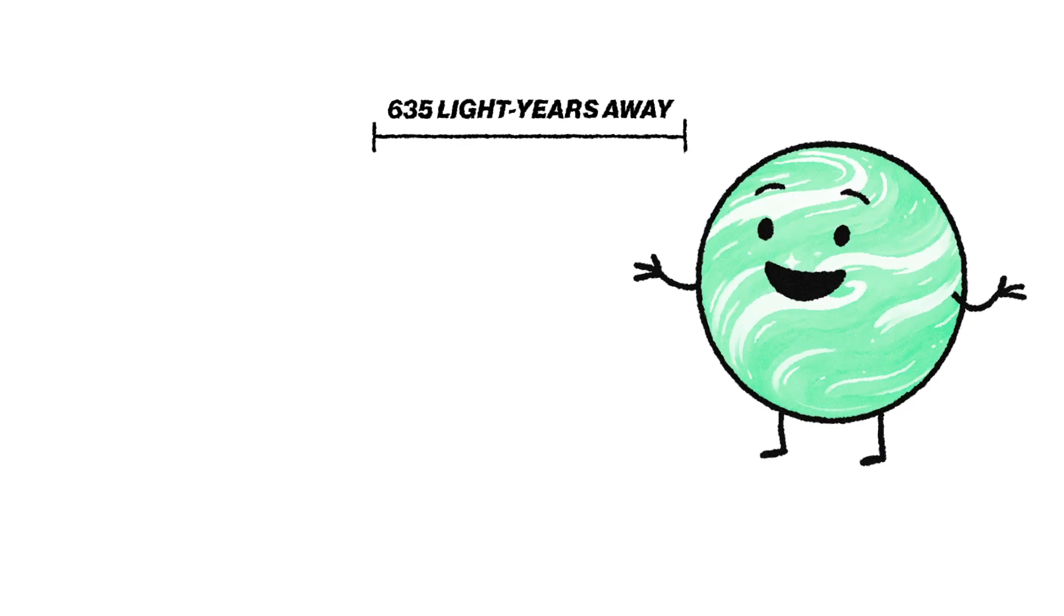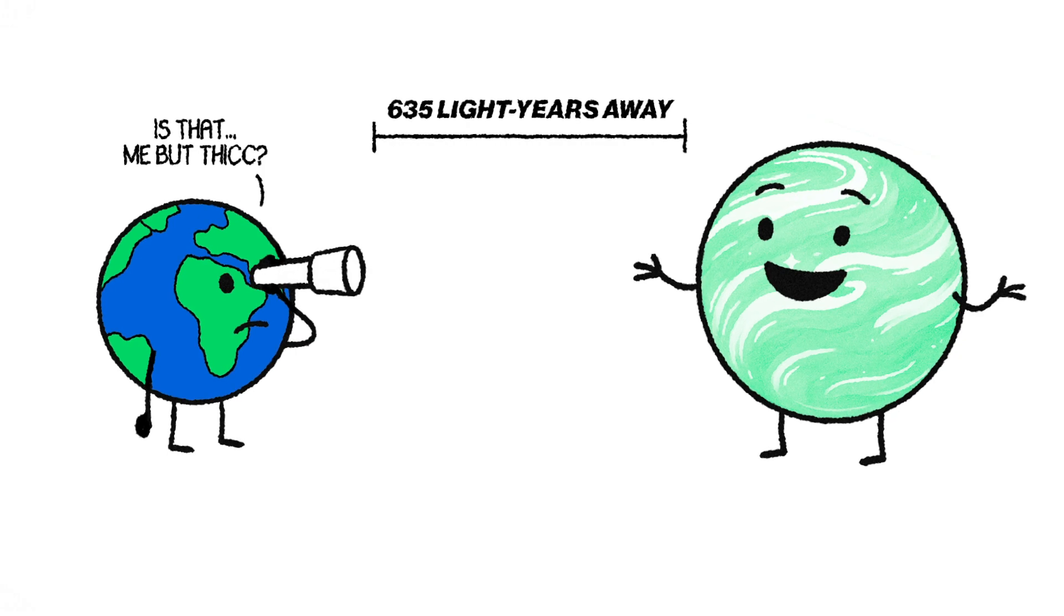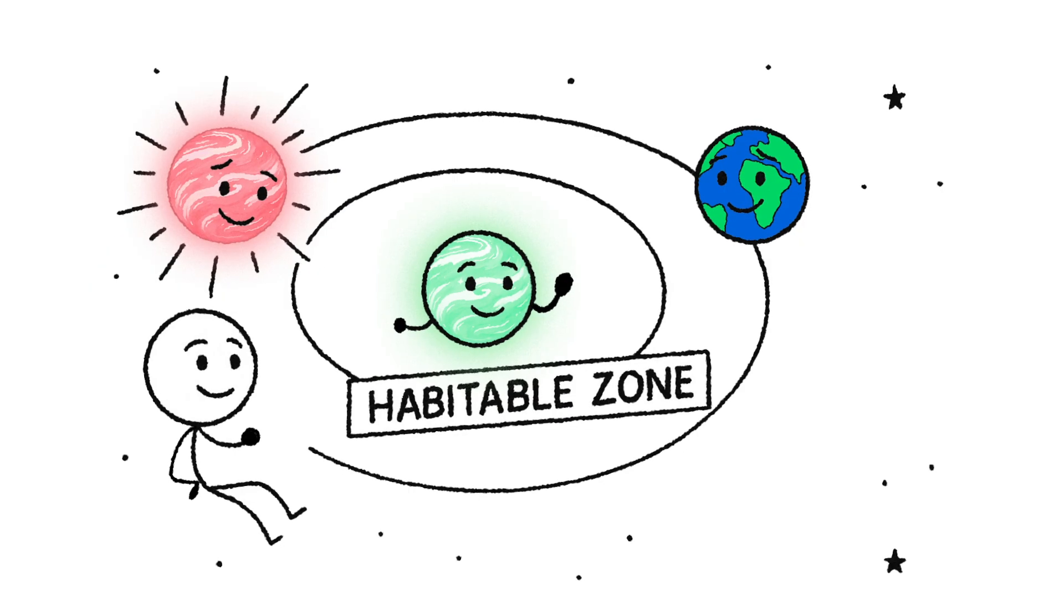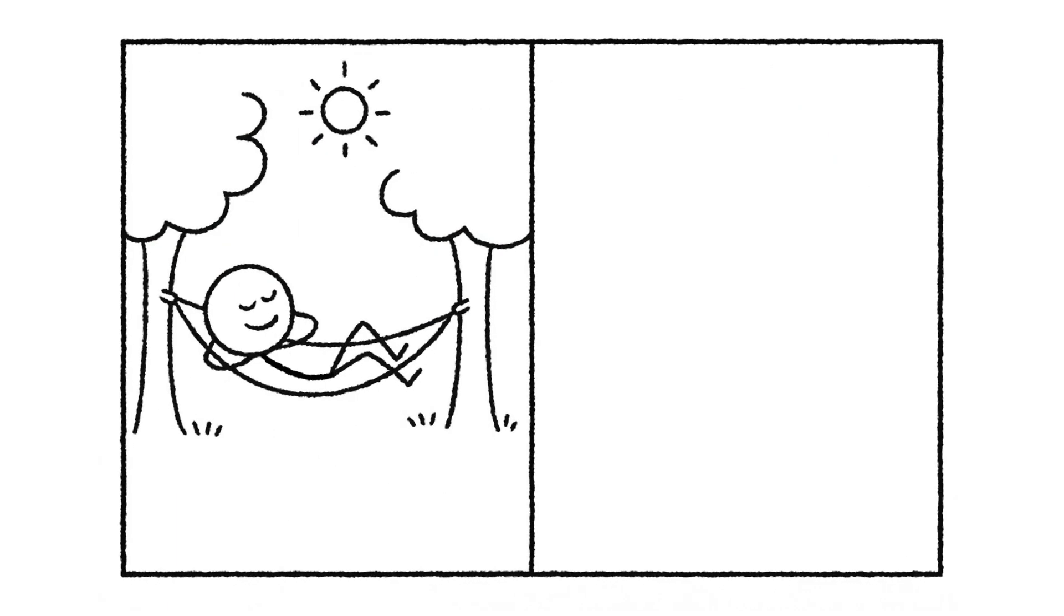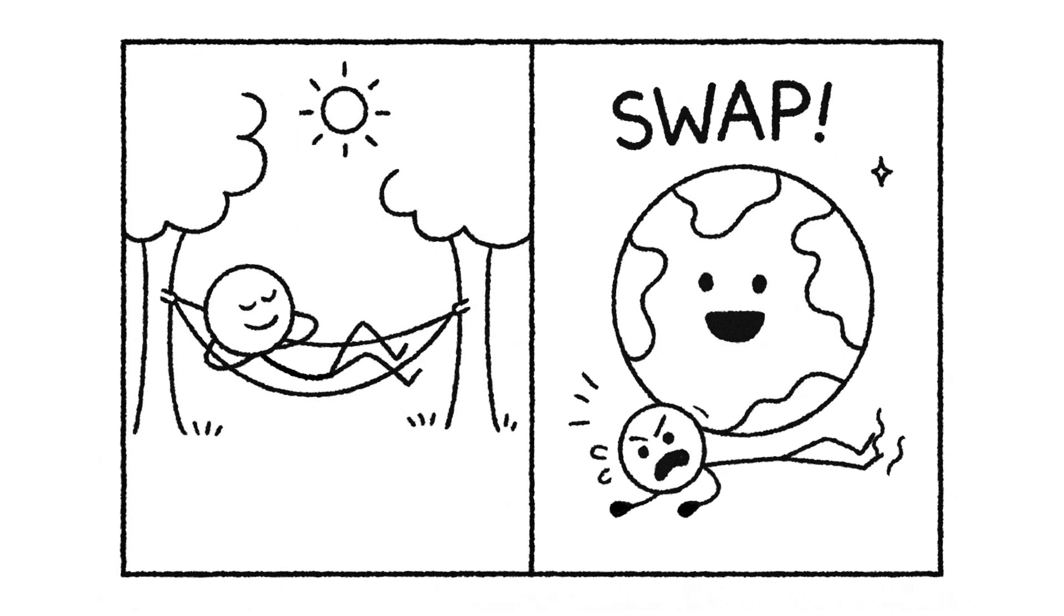About 635 light-years away is a planet that looks a lot like home, just bigger. Kepler-22b orbits a star like our sun, since it's comfortably in the habitable zone and might be wrapped in oceans. It's Earth-like, but supersized. So what if we swapped Earth for this planet twin? Would we thrive or just get crushed? Let's find out.